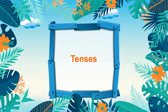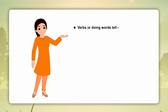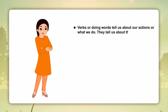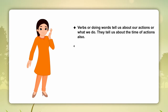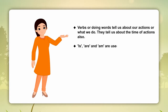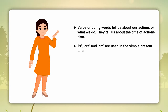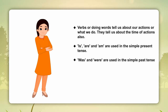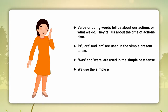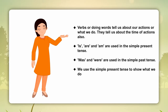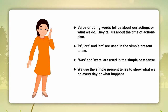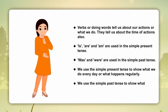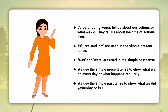Tenses. Verbs or doing words tell us about our actions or what we do. They also tell us about the time of actions. Is, are and am are used in the simple present tense. Was and were are used in the simple past tense. We use the simple present tense to show what we do every day or what happens regularly. We use the simple past tense to show what we did yesterday or in the past.